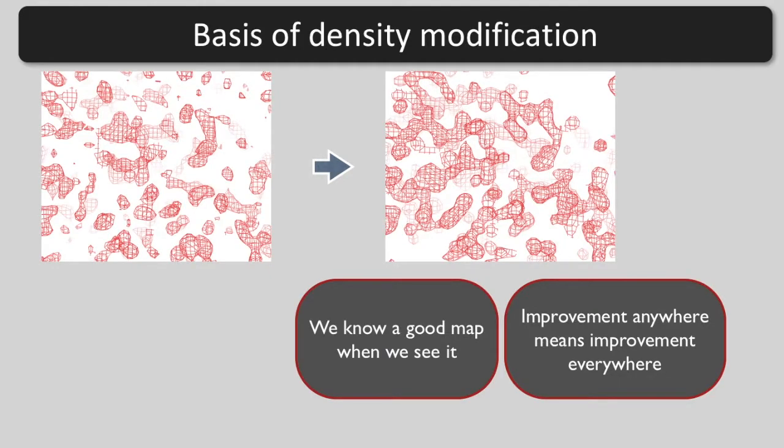We are going to improve the noisy map to create the clear map using two key facts. First, we know what a good map looks like. Second, and most importantly, if we improve the phases by improving the map anywhere, we automatically improve the map everywhere.